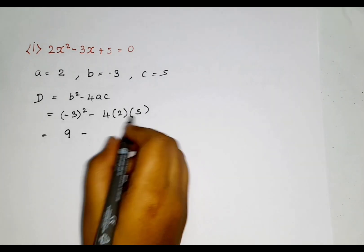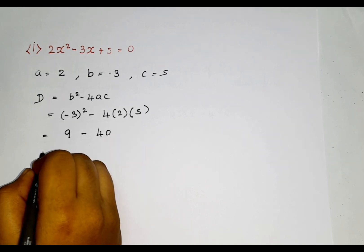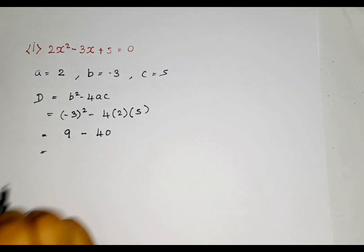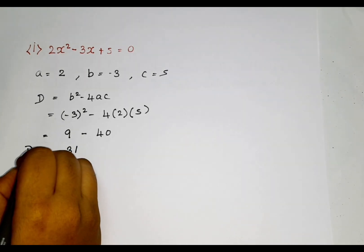And then minus. 5 times 2 is 10. So, 10 into 4 is 40. When we subtract them, we will get minus 31. We got D is minus 31.